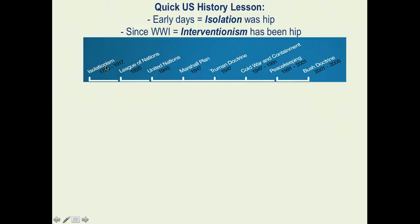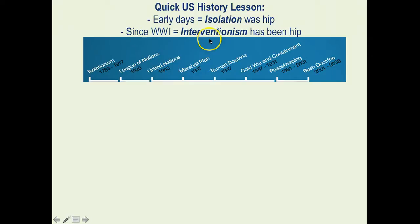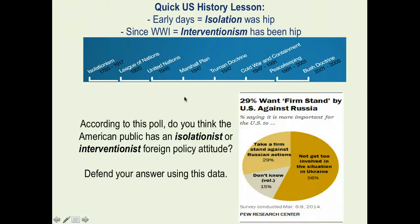For the most part, we stayed away from other countries, trying to develop ourselves. But since the end of World War One and the development of the League of Nations — which we did not join — the United States has been involved in international affairs. This is often called interventionism: the United States plays a role, but that role has changed depending on the time period.